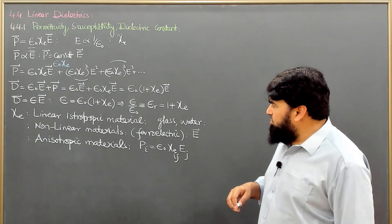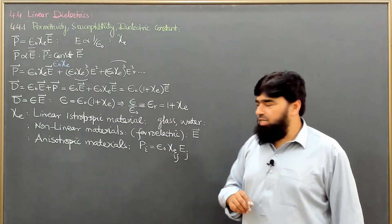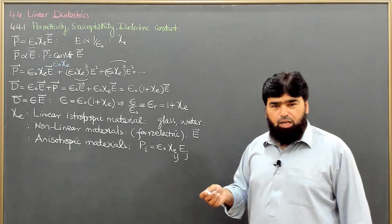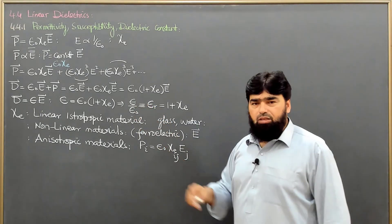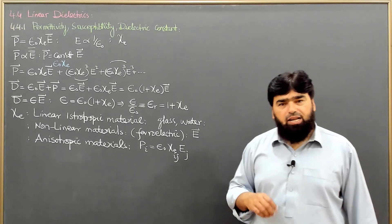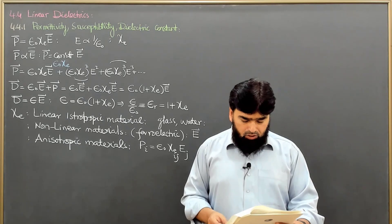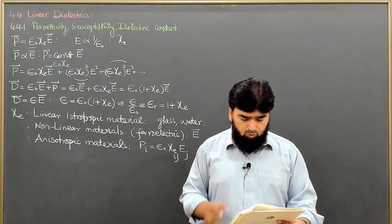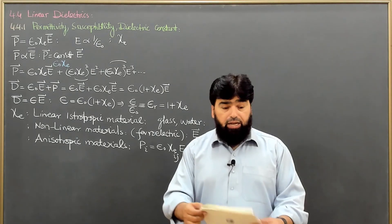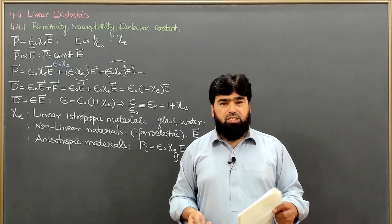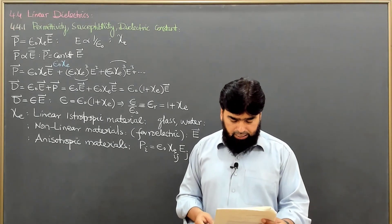To summarize: permittivity describes how many field lines are permitted to enter the material; electric susceptibility describes how much those lines are able to polarize the material; and the dielectric constant equals 1 + χₑ, i.e., the permittivity relative to vacuum. In this chapter we discuss only linear dielectrics.